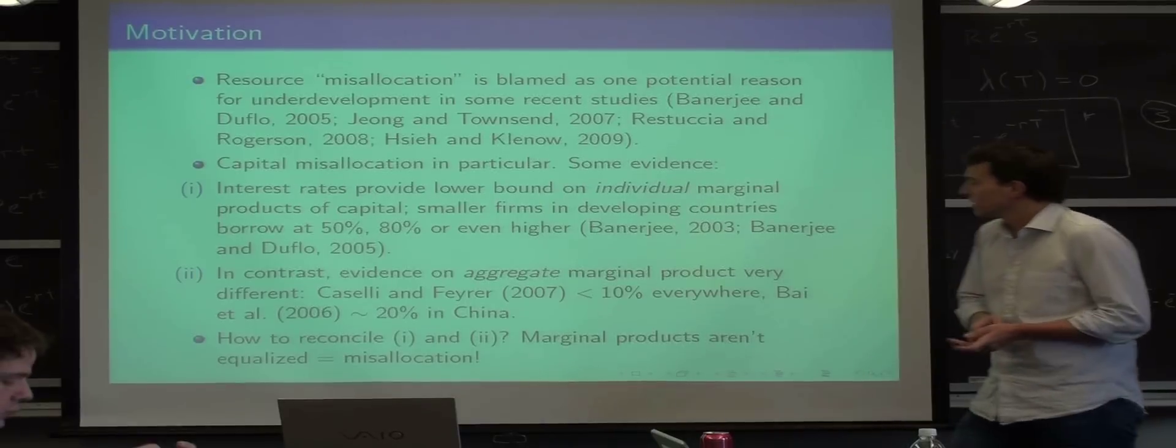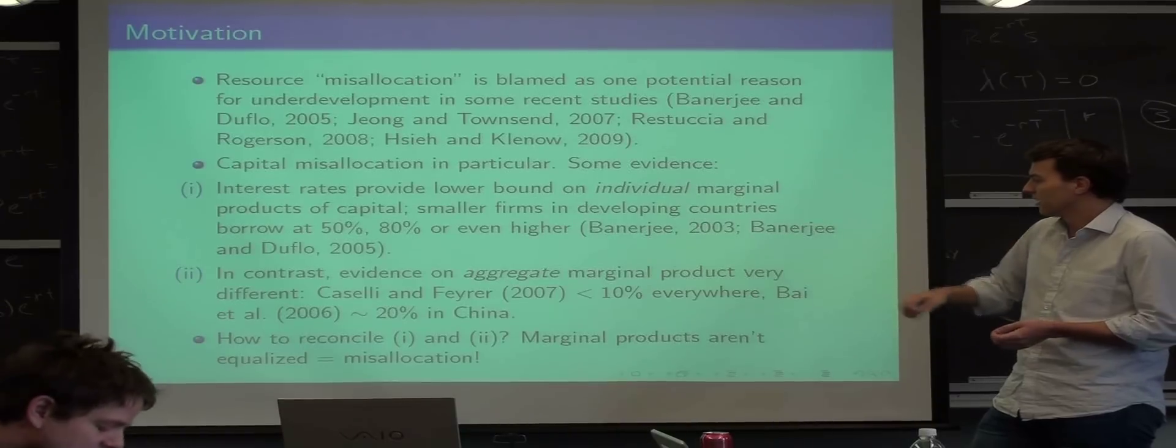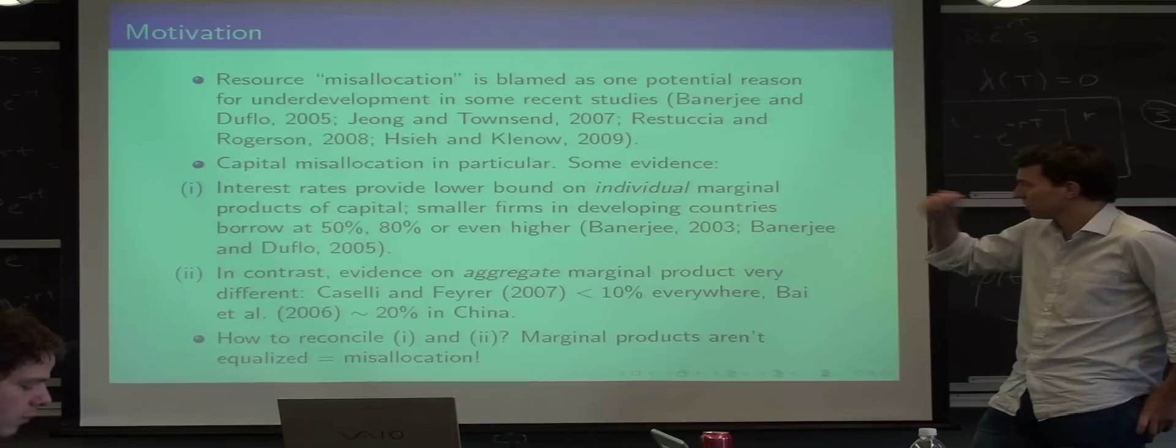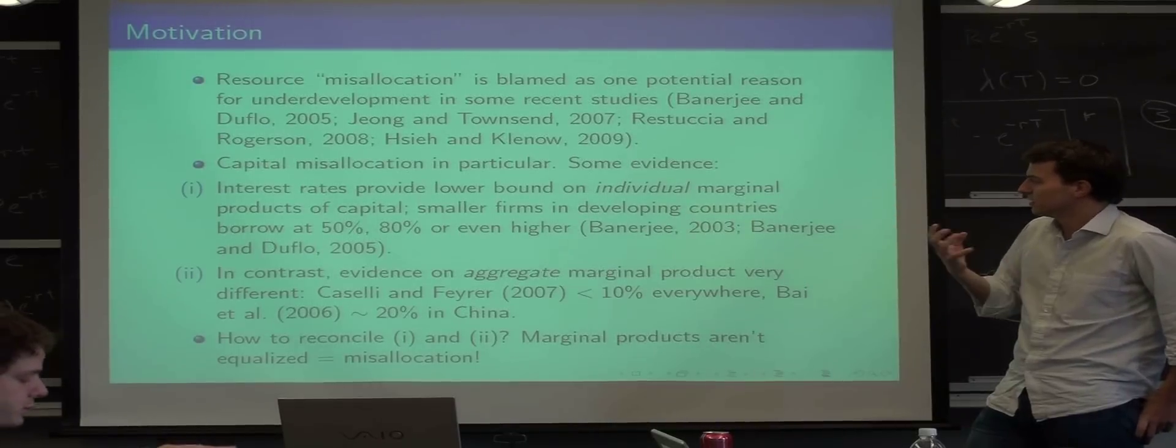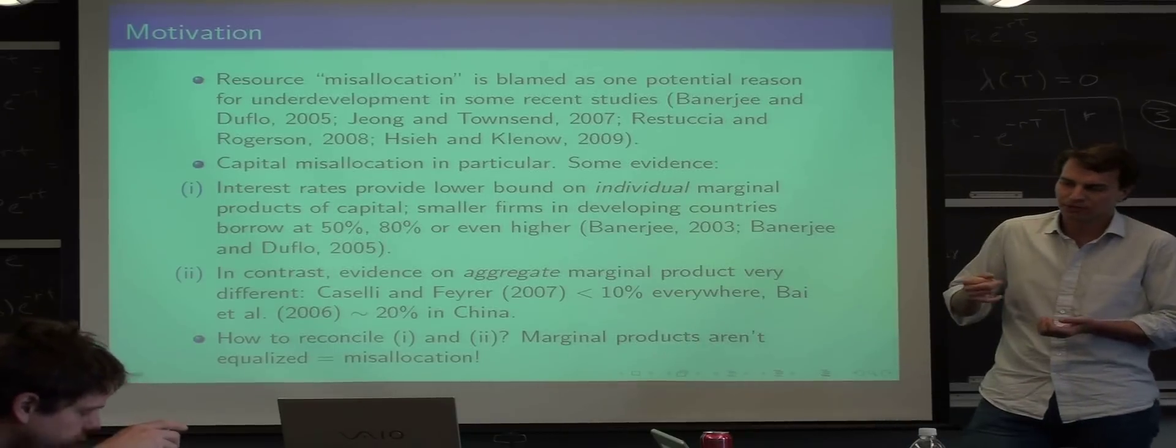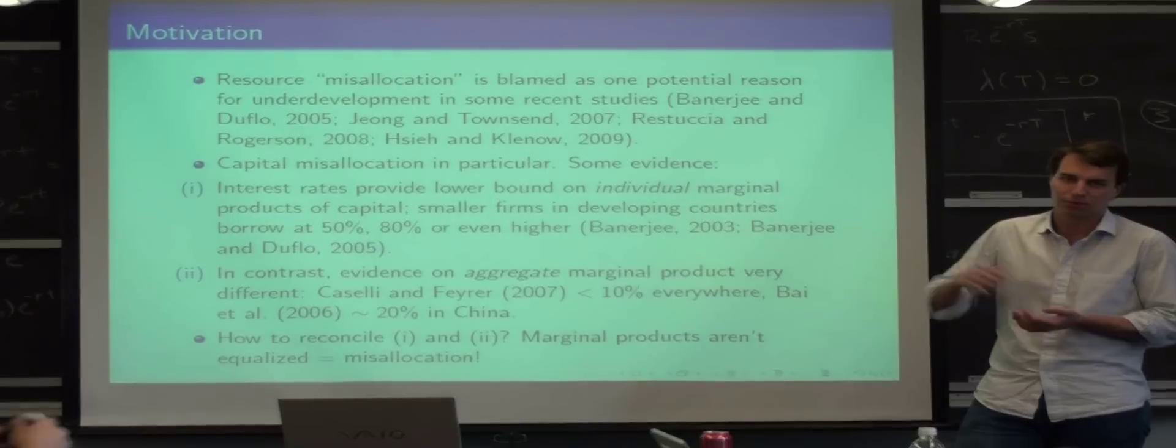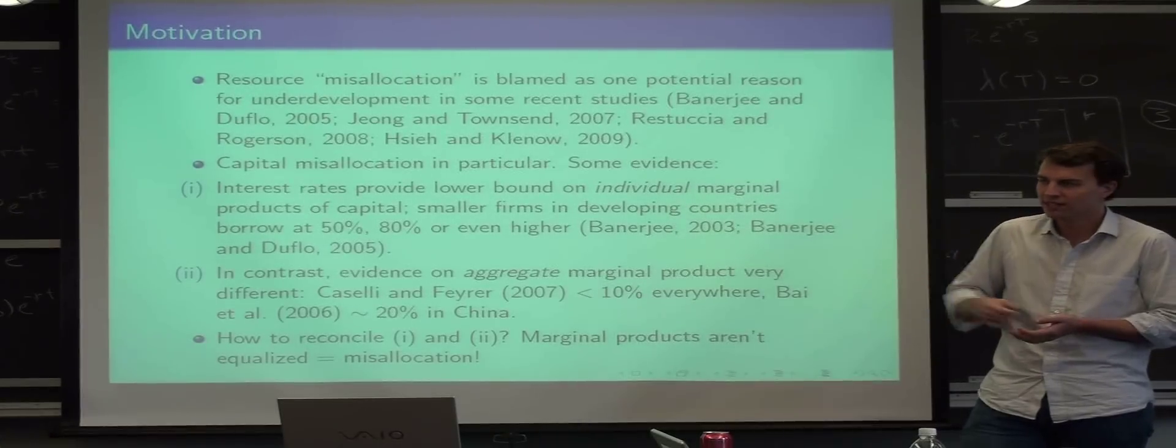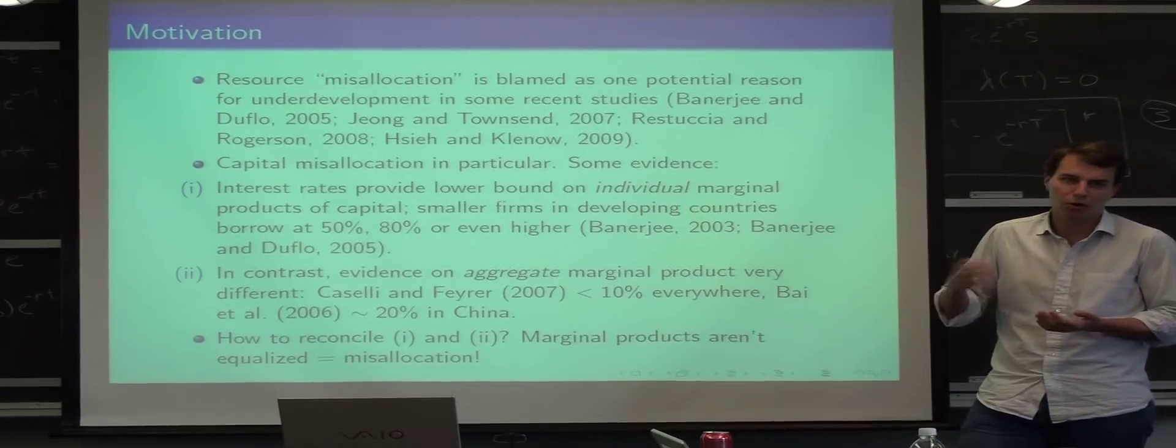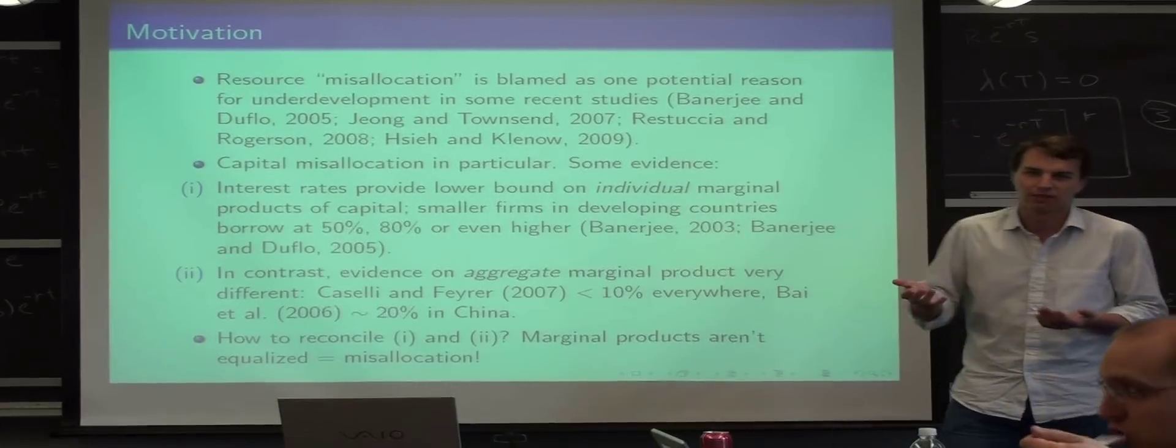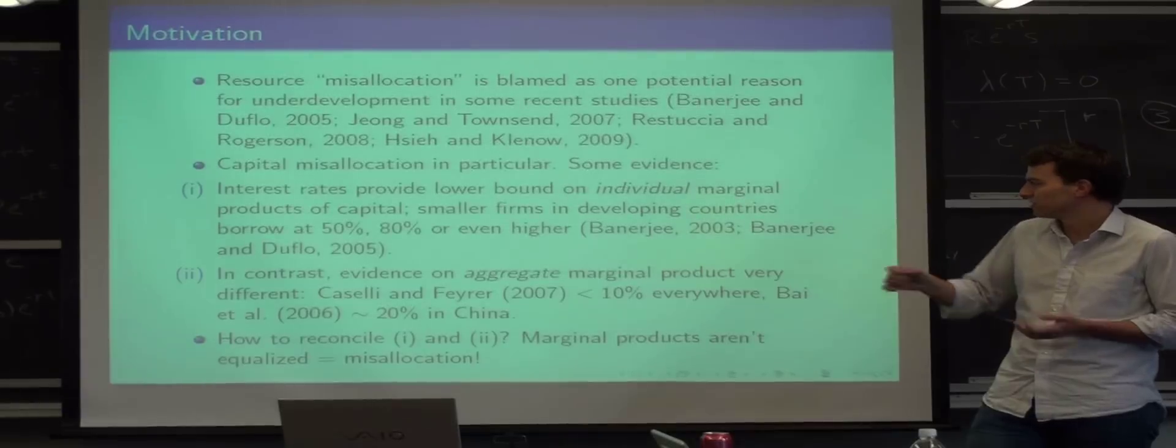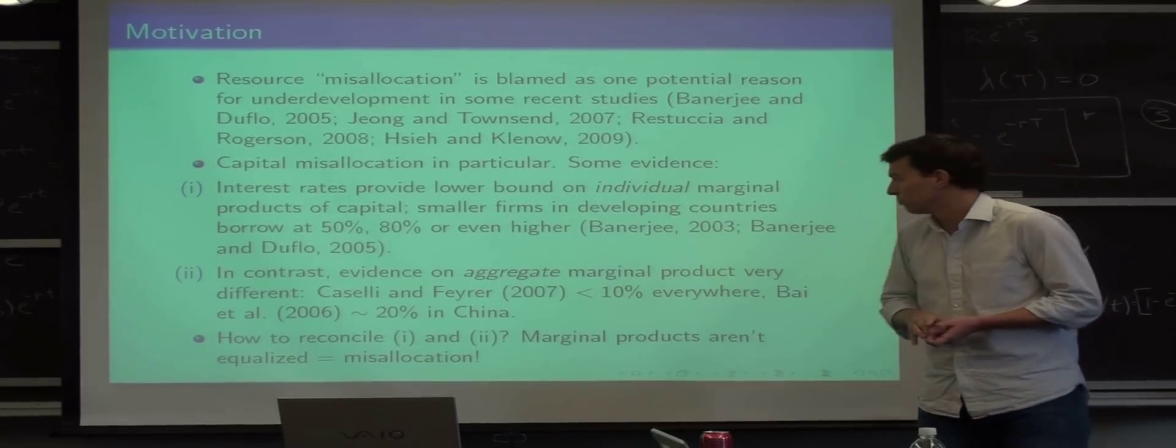So in particular, the first bullet point is that interest rates provide a lower bound on individual marginal products. So if you take out capital from the bank, or you borrow money to invest into machinery, and the bank charges you a 50% interest rate, you better hope that you actually have a return that's higher than 50% because otherwise you wouldn't do it. So that's just the idea that interest rates are lower bounds to individual marginal products.